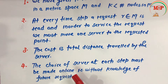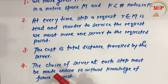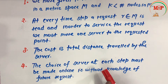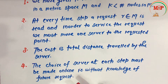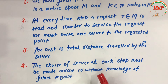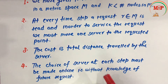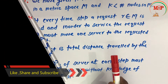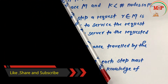The fourth point is: the choice of server at each step must be made online, without knowledge of future requests. That is, we do not know which or how many requests will come in the future, but still the server choice must be made online. This is what the algorithm of the k-server problem does.